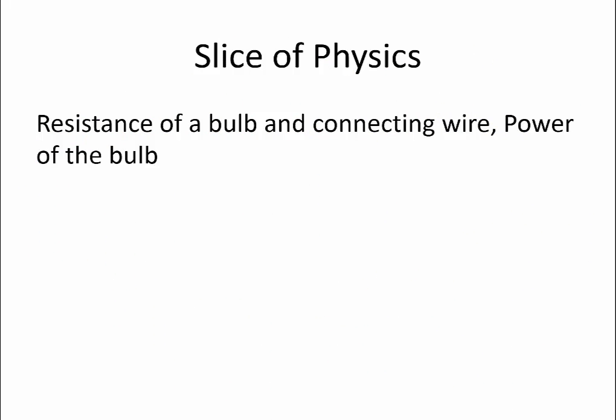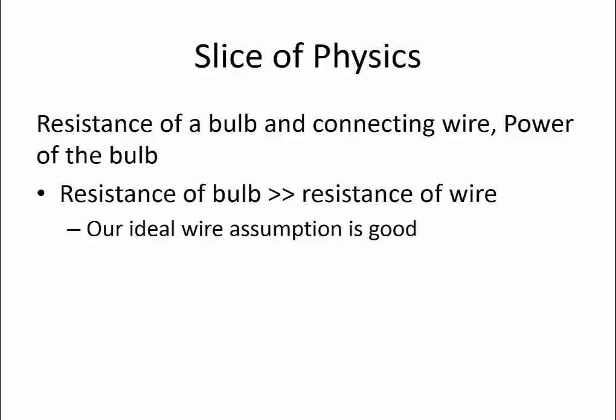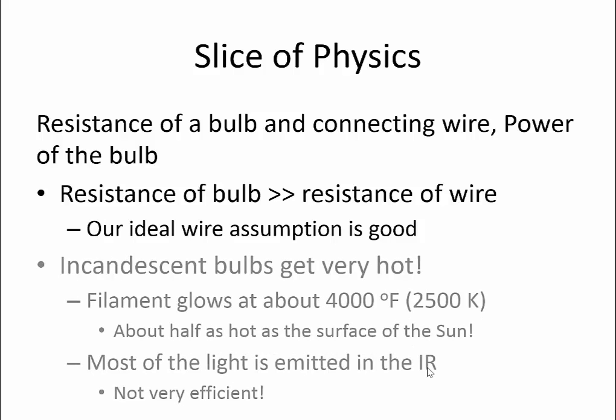In this slice of physics we got some more practice working with resistance in a circuit and in doing so we saw a couple of important things. First, we tested our ideal wire assumption and found it to be pretty good in confirming that resistance of wires is much less than resistance of other resistors in the circuits like bulbs. Next, we calculated the power that's put out by these bulbs and realized that even though the filament gets very hot about half the temperature of the surface of the sun, most of the energy put out is in the form of heat and doesn't help us see things. So these bulbs are not very efficient.